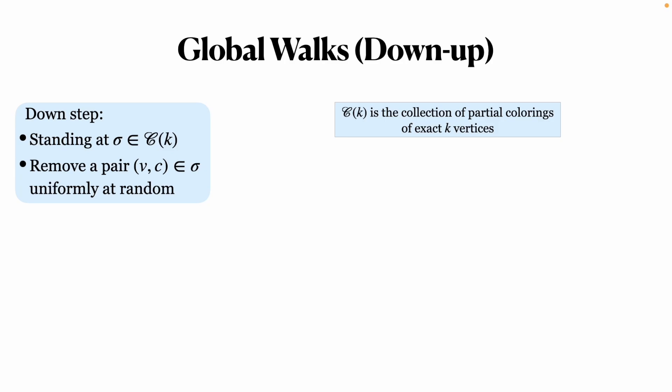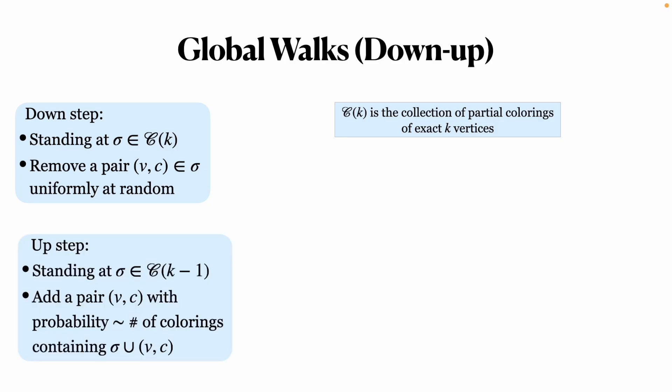The Glauber walks are composed of two steps, the down step and the up step. The down step removes a pair uniformly at random, and the up step adds a pair with a probability based on the number of colorings containing this pair. For instance, we start from the partial coloring like this in C3.